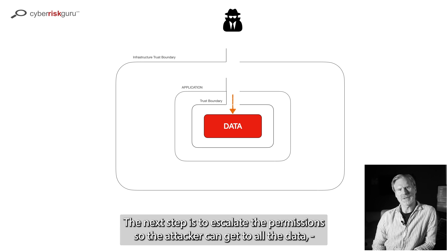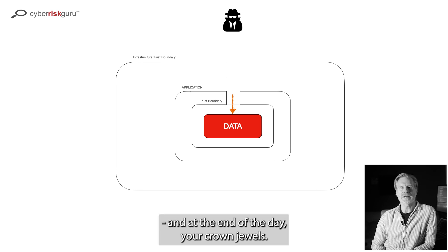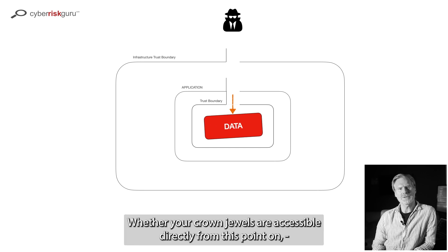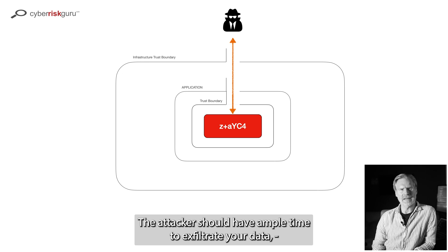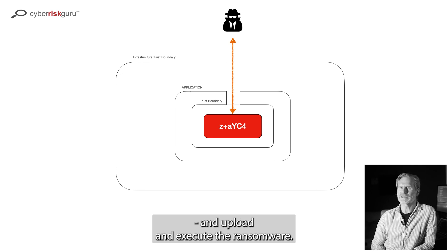The next step is to escalate permissions so the attacker can get to all the data — your crown jewels. Whether your crown jewels are accessible directly from this point, or it requires some lateral movement to get file system access, doesn't really matter. The attacker should have ample time to exploit your data and upload and execute the ransomware.